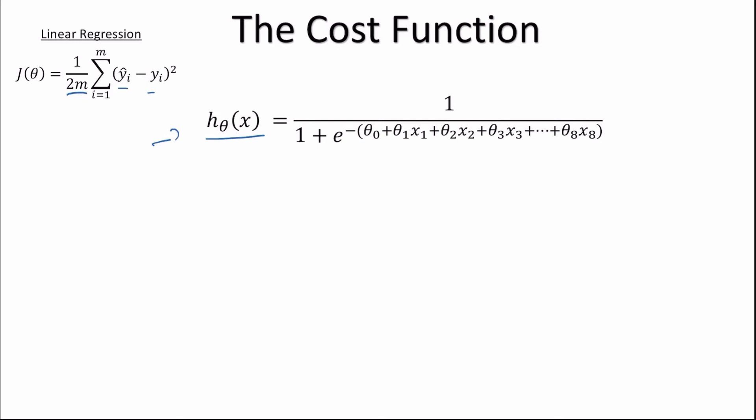The cost function of logistic regression is separated into two groups. First, if y equals 1 — that is, if it did rain tomorrow — and our model predicted some value h_theta(x) between 0 and 1, we want to see how close that predicted value is to 1. For that, we simply compute minus log of h_theta(x). If h_theta(x) is close to 1, say 0.9, we expect a small cost. If it's far away from 1, we expect a high cost.